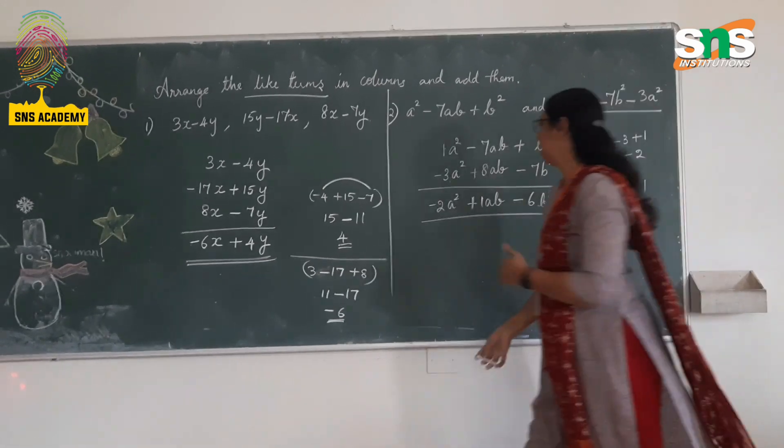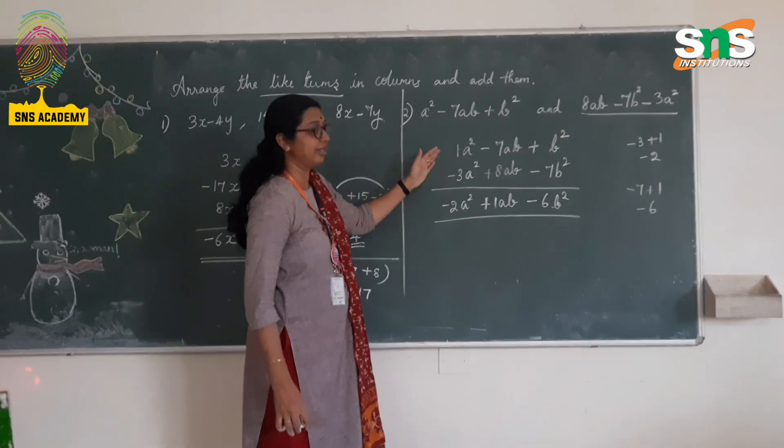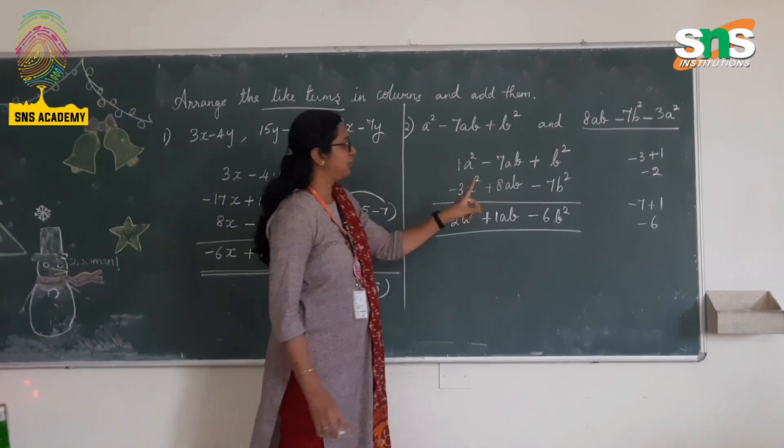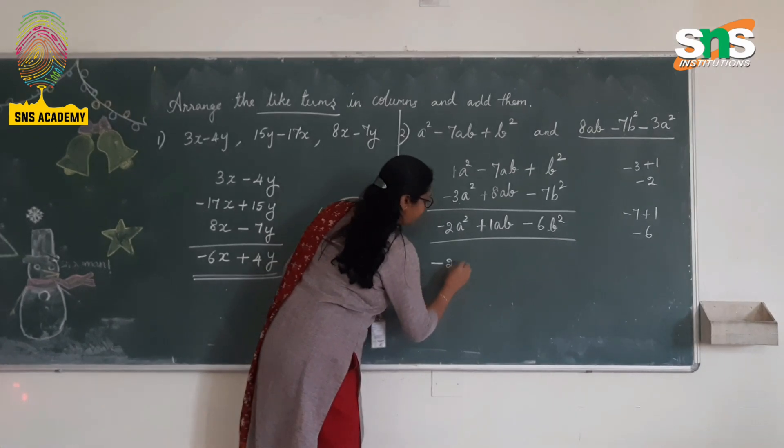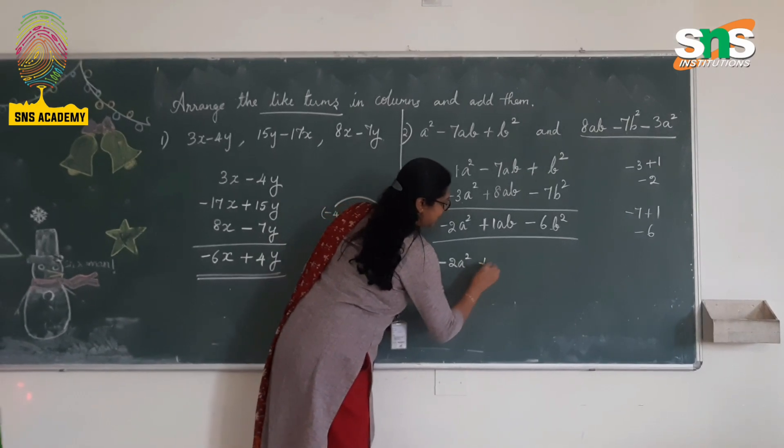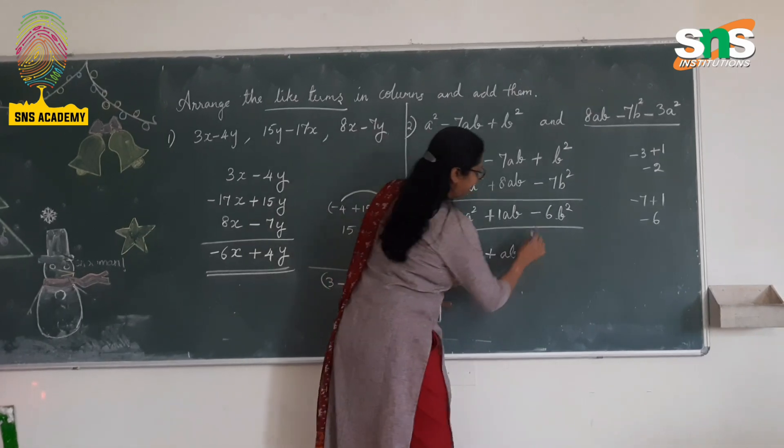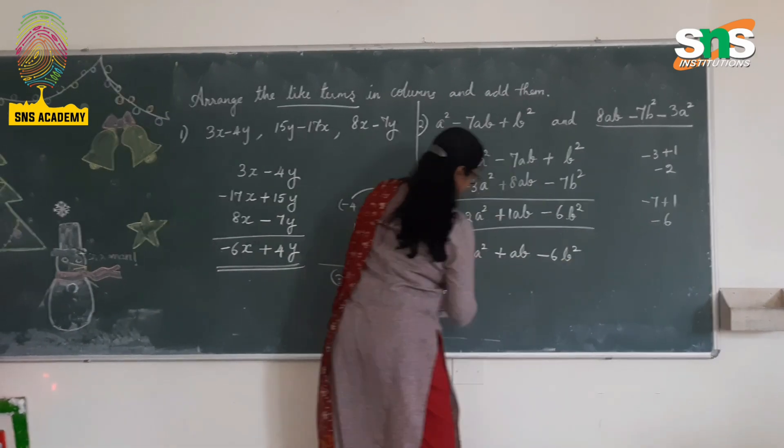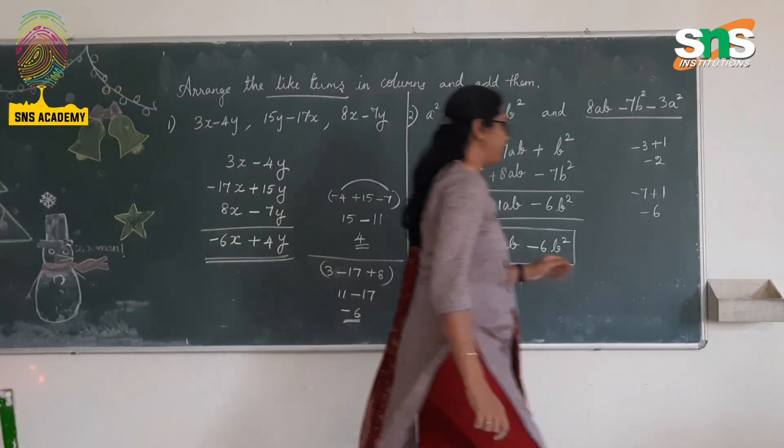So you can check this answer here. You have arranged it according to the like terms and then you have added it. So check for the signs of the coefficients. So the answer is -2a² + ab. I am not writing this coefficient when you write the answer. It is nothing but ab. So minus 6b². Hope this is clear. Okay, we are watching more videos. Okay.